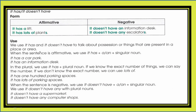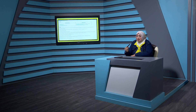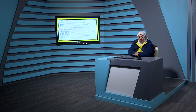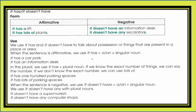We use 'it has' and 'it doesn't have' to talk about possessions or things that are present in a place or area. When the sentence is affirmative, we use 'it has' with 'a' or 'an' and a singular noun. For example: 'it has a car park', 'it has an information desk'.